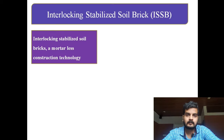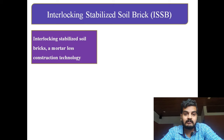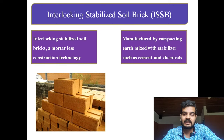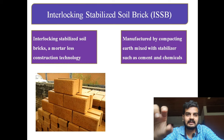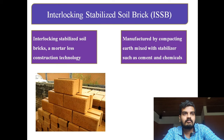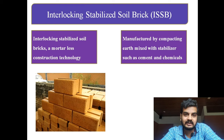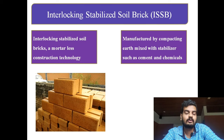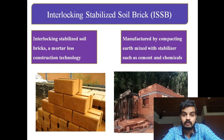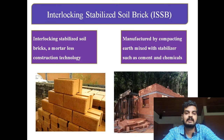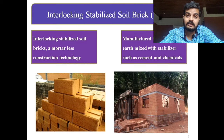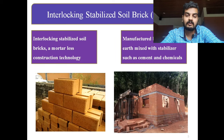Next is the Interlocking Stabilized Soil Brick, which is essentially CSEB but with interlocking grooves added. As you can see in the picture, these bricks use dry stacking — a mortar-less construction technology. The brick is the same as a CSEB compressed earth block but with an interlocking system for locking purposes. No cement, no sand, no bonding material is used between the brick courses. There is a house constructed with these interlocking bricks where you can see no gap between courses because no mortar is used.